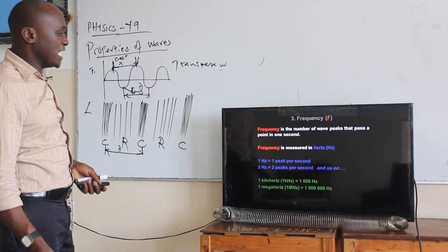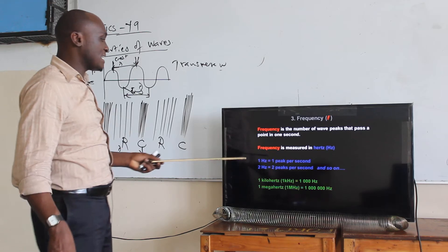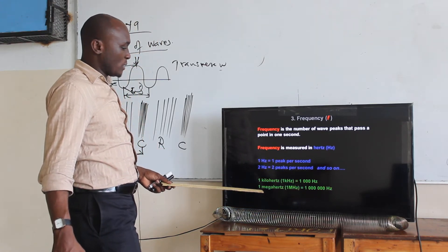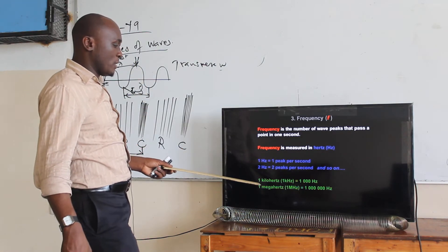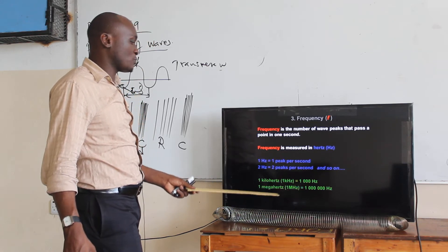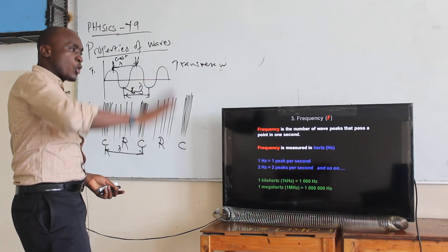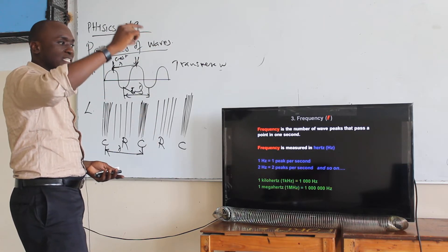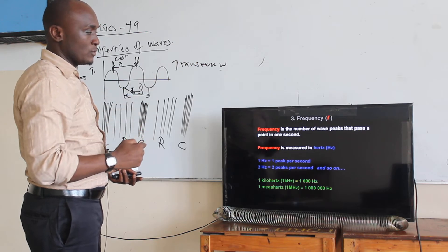Frequency is measured in what you call hertz. One hertz is one peak per second, two hertz is two peaks per second, and so on. If there are a thousand hertz, we can say it's one kilohertz; if it's a million hertz, we can say it's one megahertz. If you go up and down ten times within one second, we say the frequency of that wave is ten hertz.